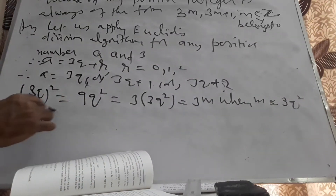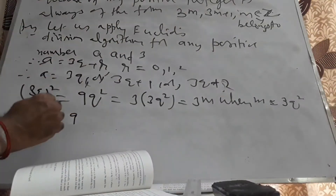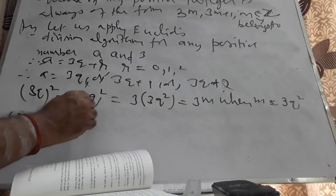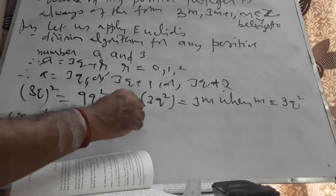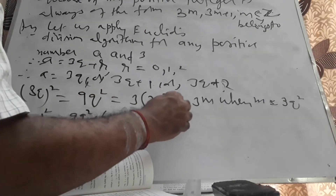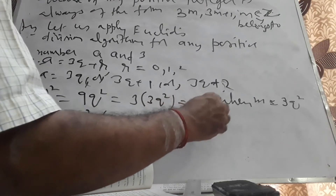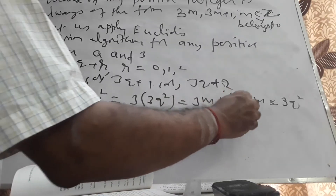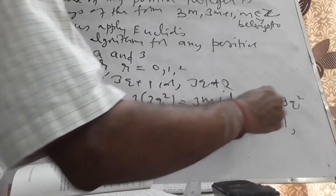(3Q+1)² equals 9Q²+6Q+1, which is 3(3Q²+2Q)+1, which is of the form 3m+1, where m equals 3Q²+2Q.